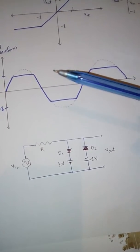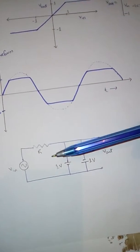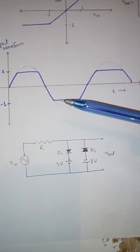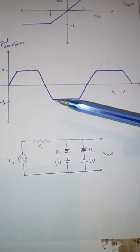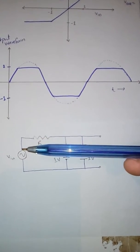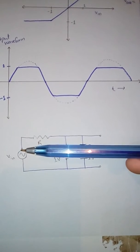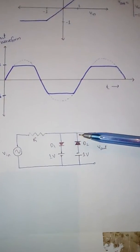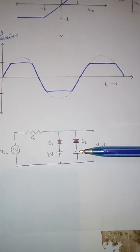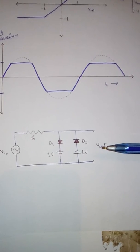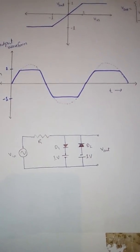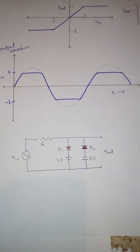As we come down the second half of the positive cycle, the signal goes down and again reaches 1 where it returns to reverse bias. Then as we go into the negative half cycle, this diode stays reverse biased until the input reaches minus 1. At that point the negative cycle makes the other diode forward biased, and the minus 1-volt battery becomes our output. So this is how the parallel-connected clipper circuit works. Thank you so much.